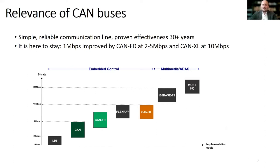Why is this the case? Mostly because of its simplicity, low cost, and effectiveness proven by more than three decades of use. Newer embodiments such as CANFD and CANXL boost its speed from 1 megabit per second to 5 or even 10 megabits per second, and prove that this bus is here to stay.